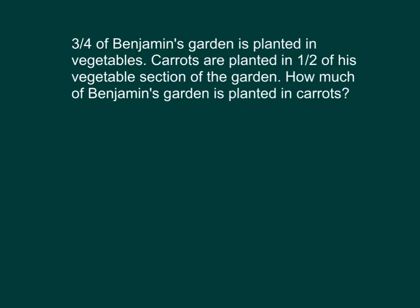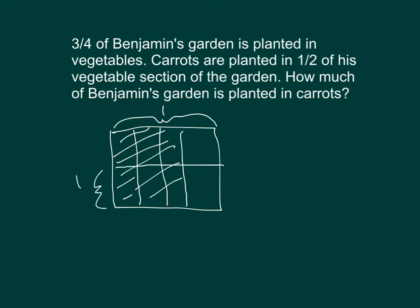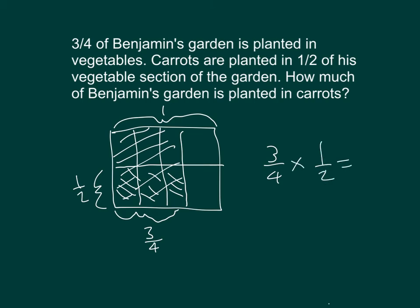Three-quarters of Benjamin's garden is planted in vegetables. Carrots are planted in one-half of this vegetable section of the garden. How much of Benjamin's garden is planted in carrots? Let's draw an area model where that's one whole. We have three-fourths of the garden planted with vegetables, and we take one-half of that three-fourths for carrots. We get three out of eight. Three-eighths of the garden is planted in carrots.